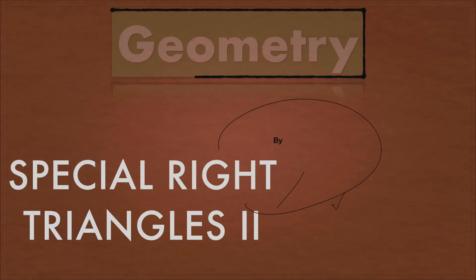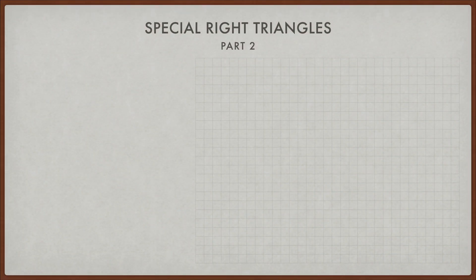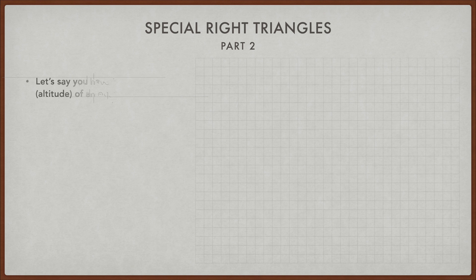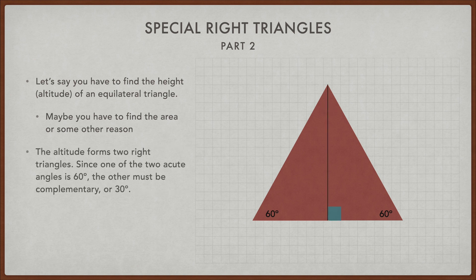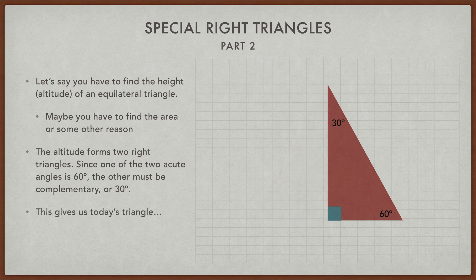So let's continue talking about special right triangles. But to do that, we actually first need to talk about a different type of triangle, an equilateral one. So let's say you have to find the height, the altitude of an equilateral triangle. Maybe you have to find the area or some other reason that you need it. So the altitude that we create to find that actually forms two different right triangles. Since one of the two acute angles is 60, the other must be complementary, or 30. Now notice that splits that angle equally, which means we've created two congruent triangles, meaning those bases will be the same, or half of any side. And that gives us today's triangle once we take out one of them.